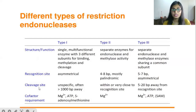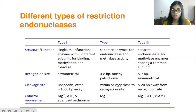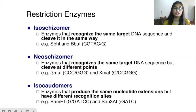When comparing these types: type one is asymmetrical because it does not create symmetric ends — it cleaves more than a thousand base pairs away. Type two is very close, around five to 20 base pairs away. These are important distinctions along with the cofactors for each type.